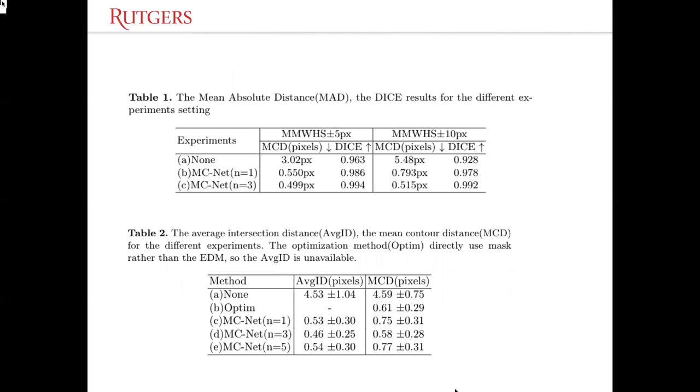Here are the results. The first table shows the mean absolute distance and Dice results for different experiment settings for MC-Net. We can see that our network can efficiently correct the misalignment even if the misalignment shifts around 10 pixels.